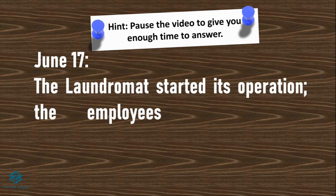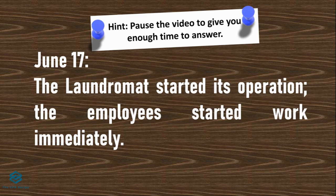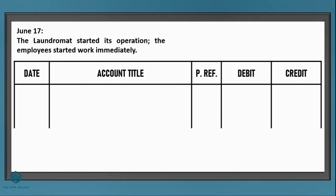On June 17, the laundromat started its operations and the employees started work immediately. Let's do the entry — put June 17. But wait, what do we debit? Actually, there's no entry here either! Just like when we hired the employees, starting operations has no effect on assets, liabilities, or owner's equity. Hence, there's no need to make an entry.